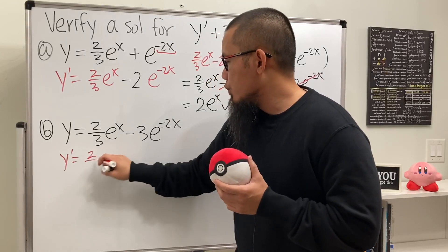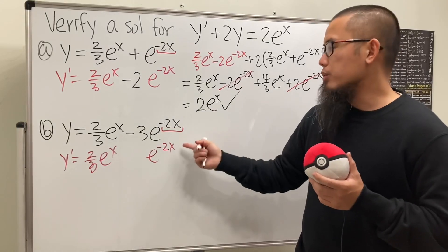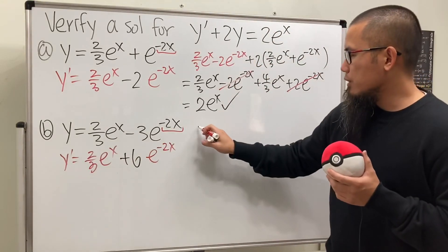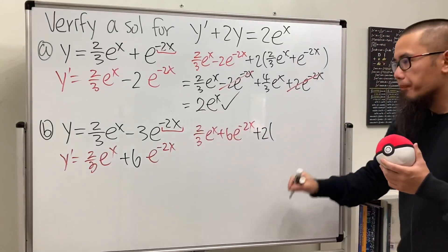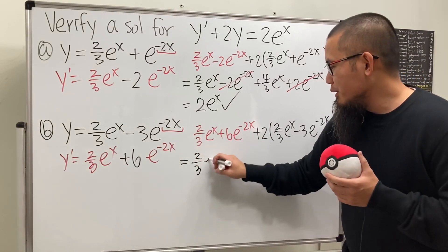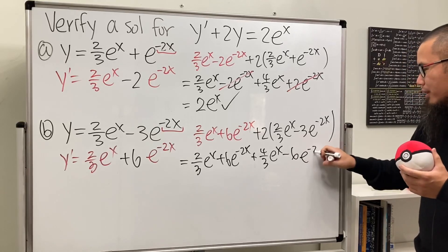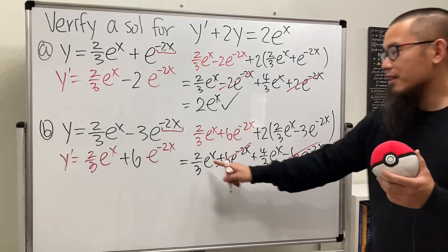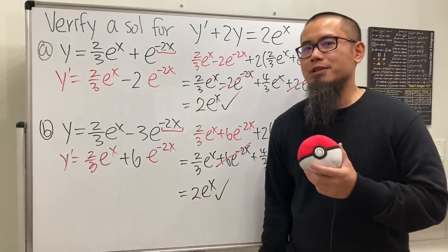For the second solution, differentiating gives y prime = 2/3 e^x + 6e^(-2x), since negative 2 times negative 3 gives positive 6. Plugging in: y prime + 2y = (2/3 e^x + 6e^(-2x)) + 2(2/3 e^x - 3e^(-2x)). Distributing: 2/3 e^x + 6e^(-2x) + 4/3 e^x - 6e^(-2x). The e^(-2x) terms cancel, and 2/3 + 4/3 = 2. So both solutions are verified.